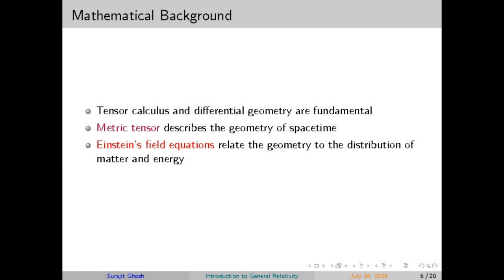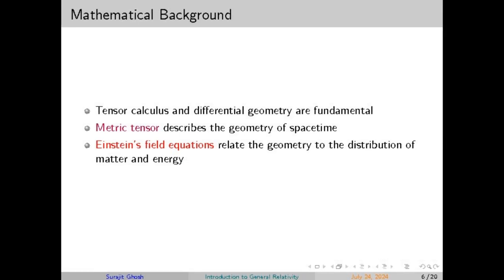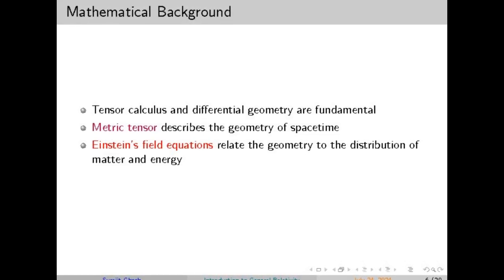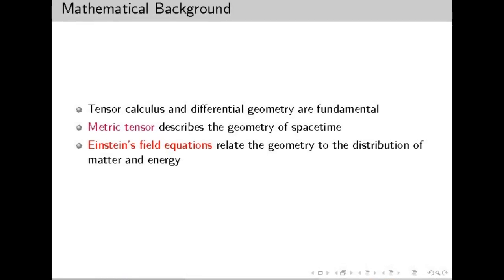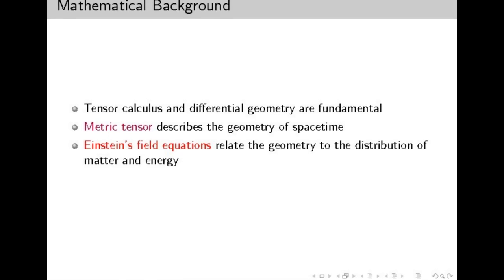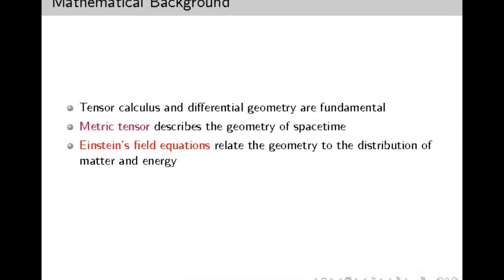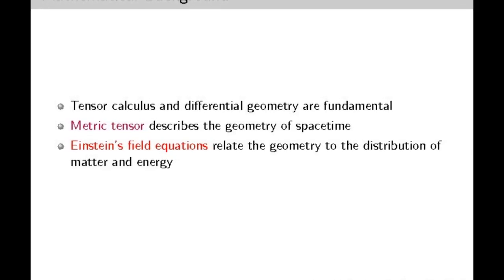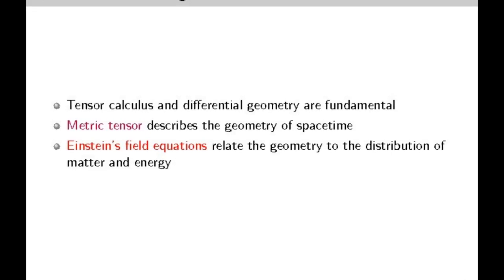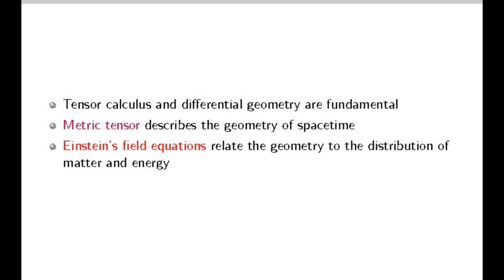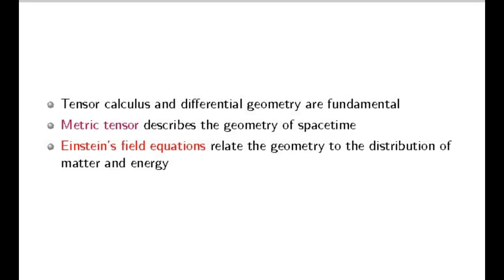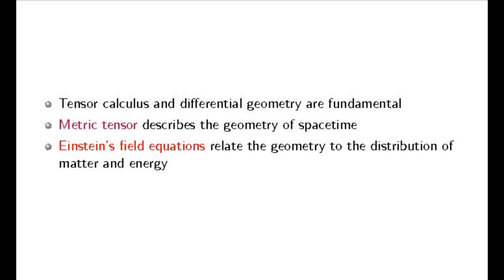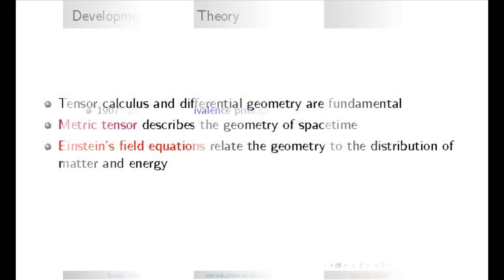Understanding general relativity not only enriches our knowledge of cosmic phenomena, but also influences practical applications. Our global positioning systems rely on the principles of both general and special relativity. Satellites orbiting Earth experience less gravitational pull than objects on the ground, and their clocks run faster. To provide accurate location data, the GPS system must account for these relativistic effects — illustrating how deeply entwined theoretical physics and technology can be.